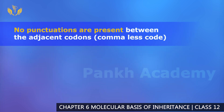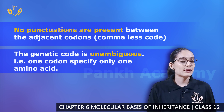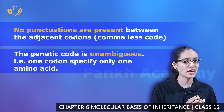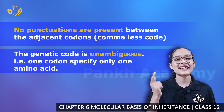The genetic code is also comma-less — meaning there is no punctuation present. There are no commas or full stops between codons. Next, the genetic code is unambiguous, which means that one codon specifies only one amino acid. One codon will always specify one and only one amino acid.